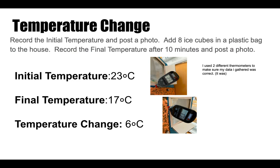When I tested out my house, the initial temperature was 23 degrees Celsius and my final temperature was 17 degrees Celsius, so my temperature change was 6 degrees Celsius. I used two different thermometers because I wanted to make sure there was a form of corroboration where my data was exactly on point.